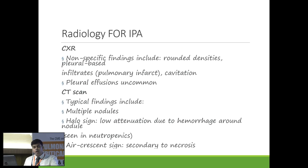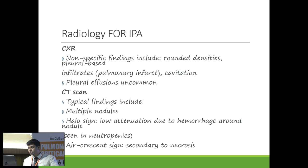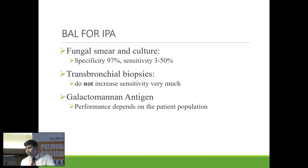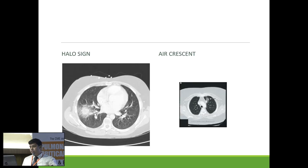Radiology for invasive pulmonary Aspergillosis can range from non-specific to very specific findings: rounded densities, usually pleural-based, infarction, or cavitation. On CT scan, findings include multiple nodules, a halo sign, and an air crescent sign. The halo sign appears as a hyperdensity surrounded by a halo, and the air crescent sign has its characteristic appearance.